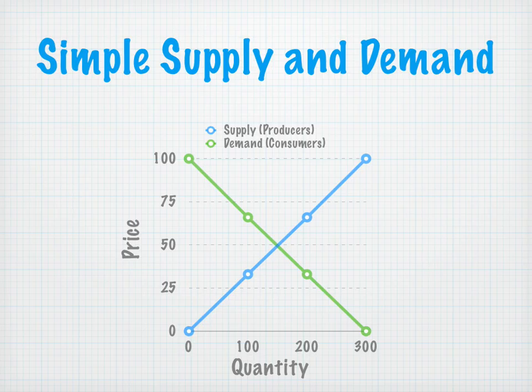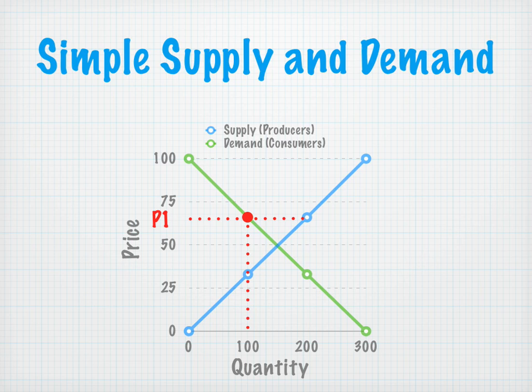Now let's look at our first market price — let's call it $66. You can see two points here. The first point is on our demand curve. At $66, consumers are willing to consume or purchase — they're demanding 100 units of whatever good that is. Then our second point, we see at $66 that producers are willing to supply 200 of whatever that good is.